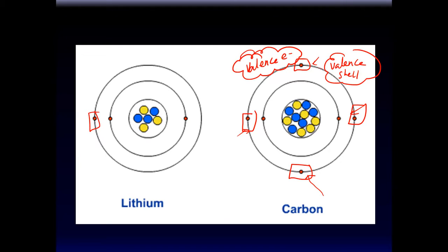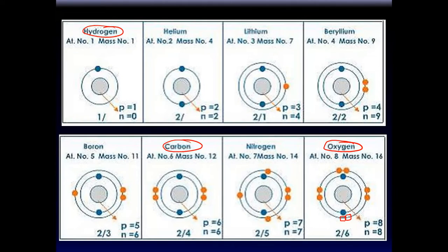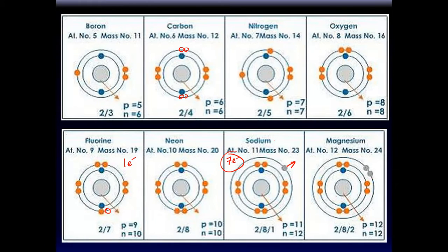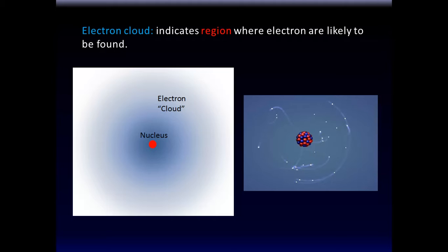Valence electrons are particularly important. An atom may have 37 electrons, but none of them matter except the ones on the outside, because only the valence electrons participate in chemical reactions. The inside electrons — part of full inner shells — are not going to participate. It is only the valence electrons that participate in chemical reactions.